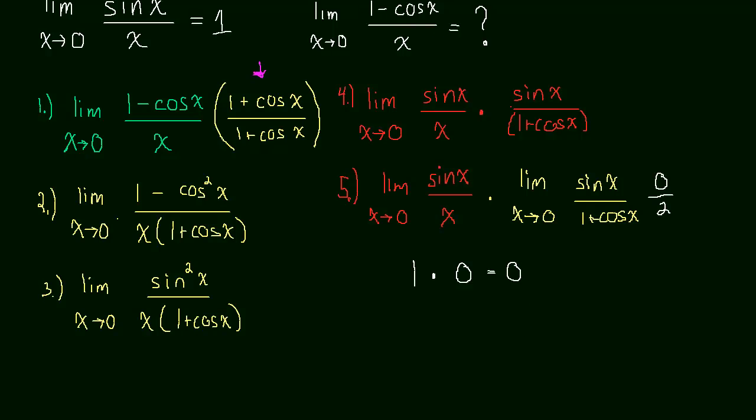So we figured it out. We got our final answer. That 1 minus cos x over x is equal to 0.